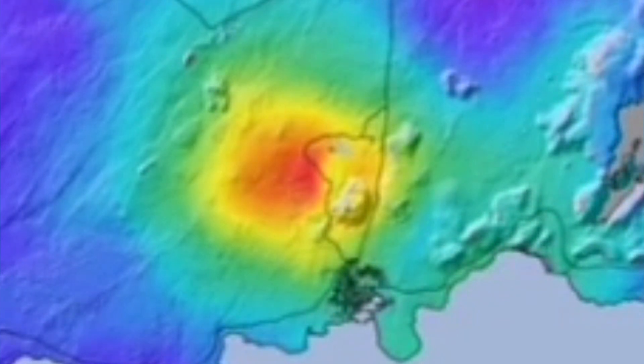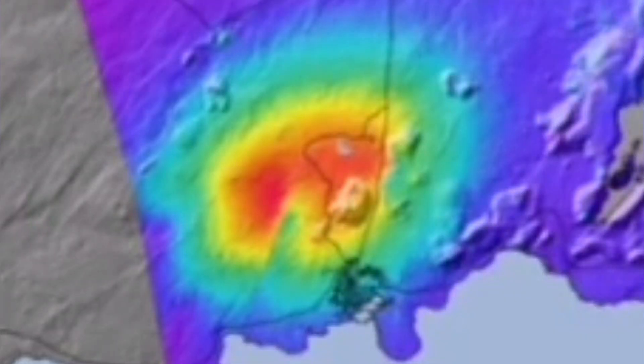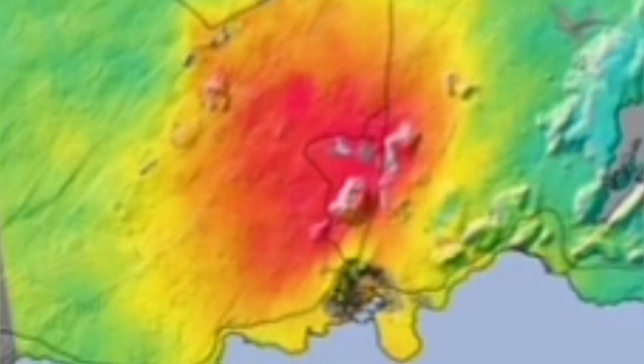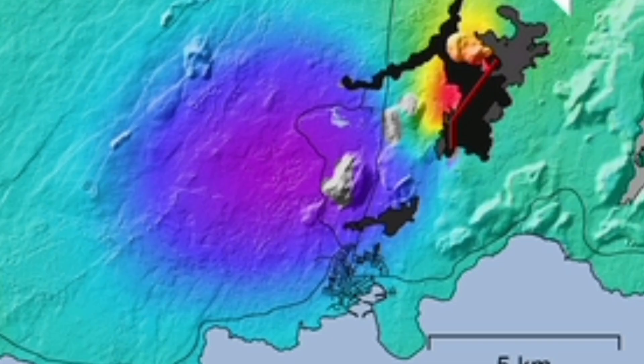The ground under Svartsengi over the past three months has swollen and shrunk, swollen and fallen. This is a process of accumulation of magma before each eruption, and then emptying during and after the eruption. This time it went 10 centimeters down, meaning 10 centimeters of magma under it in the rocks.